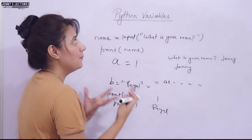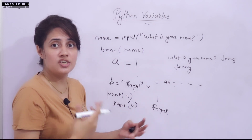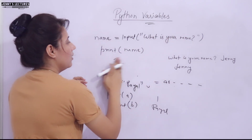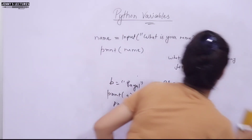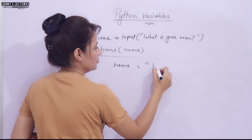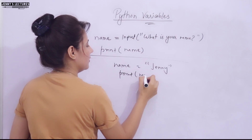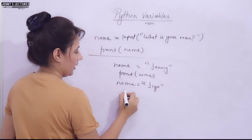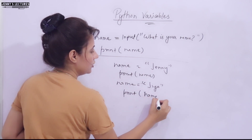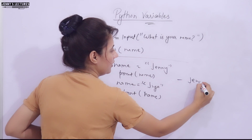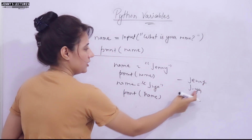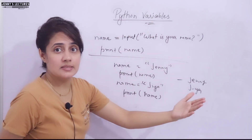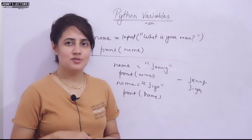As the name suggests, variables means values can vary — you can change the value of a variable; it's not fixed. Suppose: name = 'Jenny', then print(name) prints 'Jenny'. Then name = 'Jia', and print(name) prints 'Jia'. We're using the same variable name, but the output changes — first 'Jenny', then 'Jia'. So we can change the values of variables.